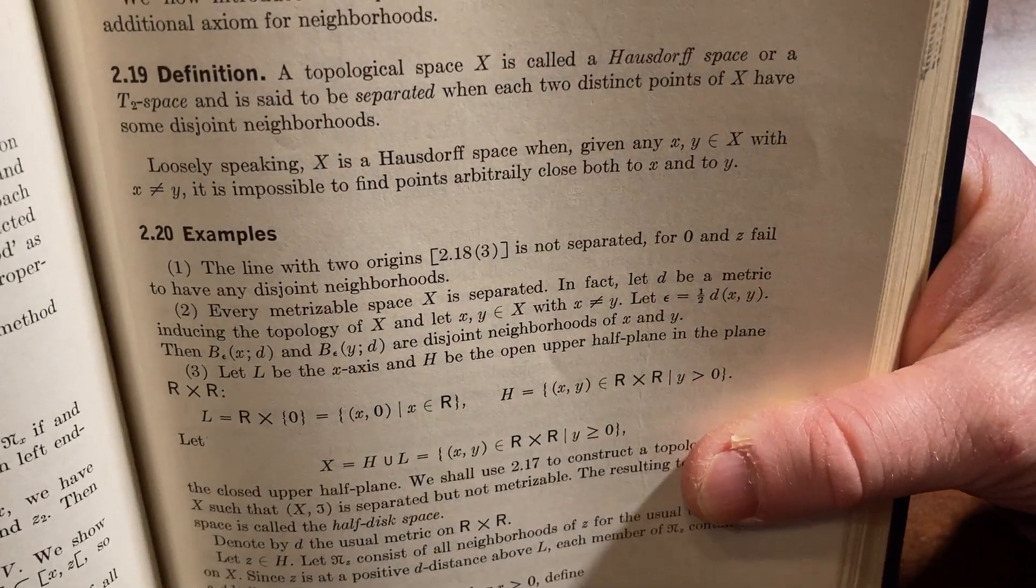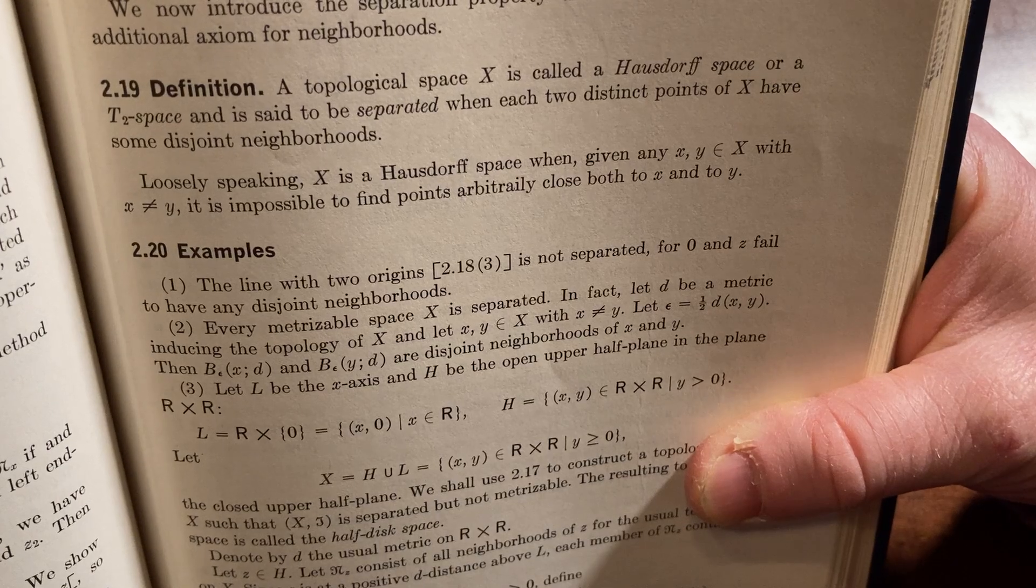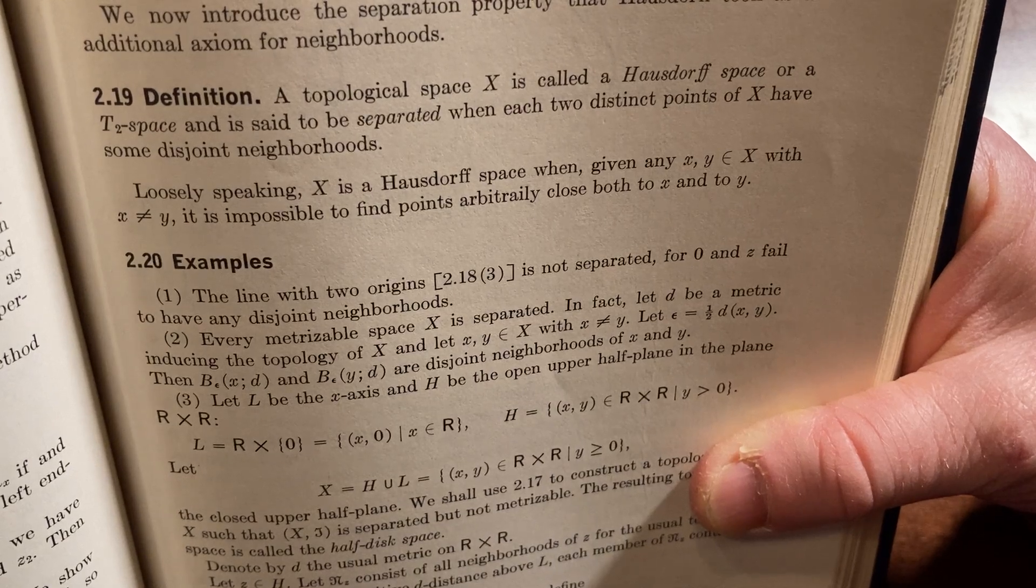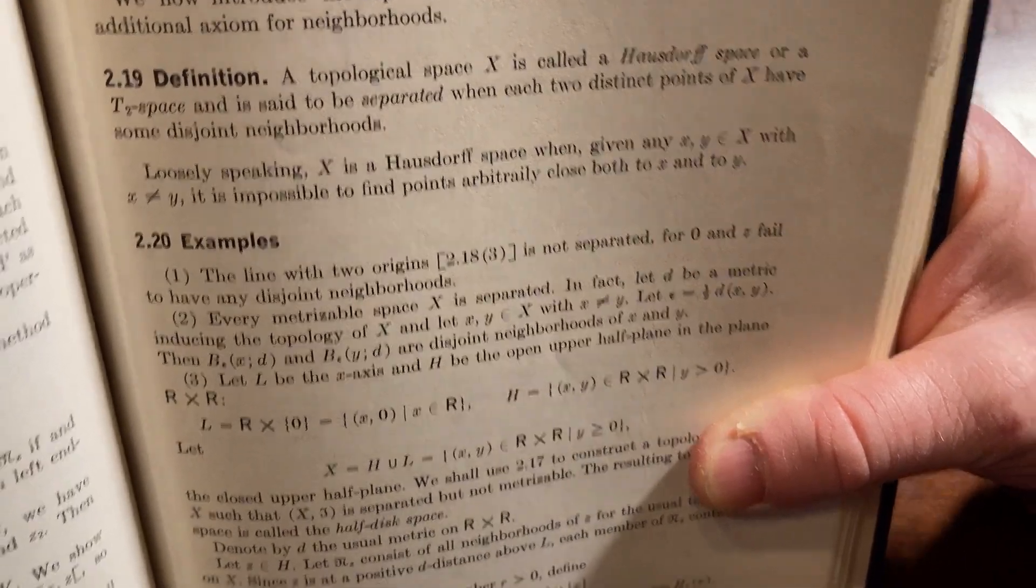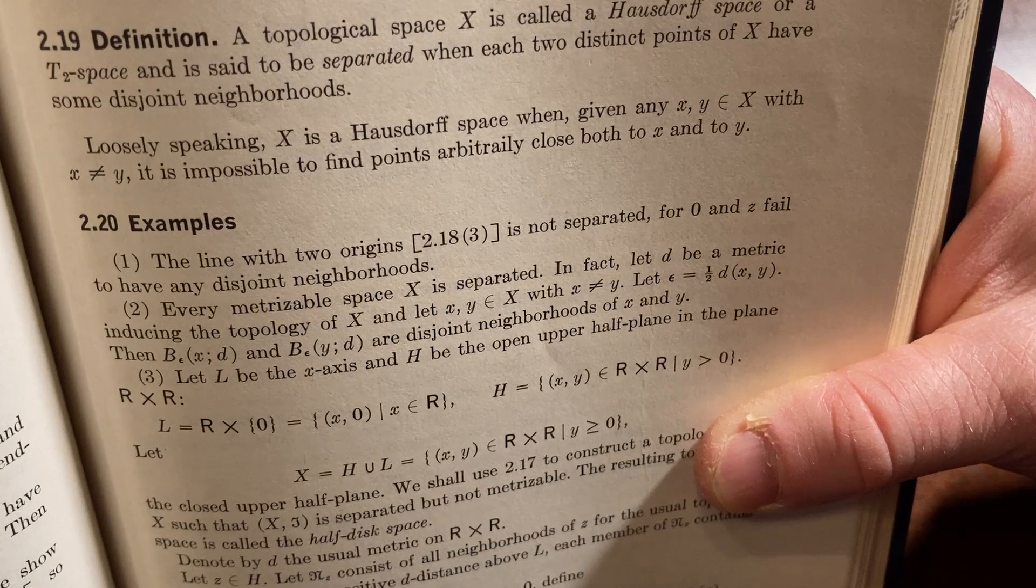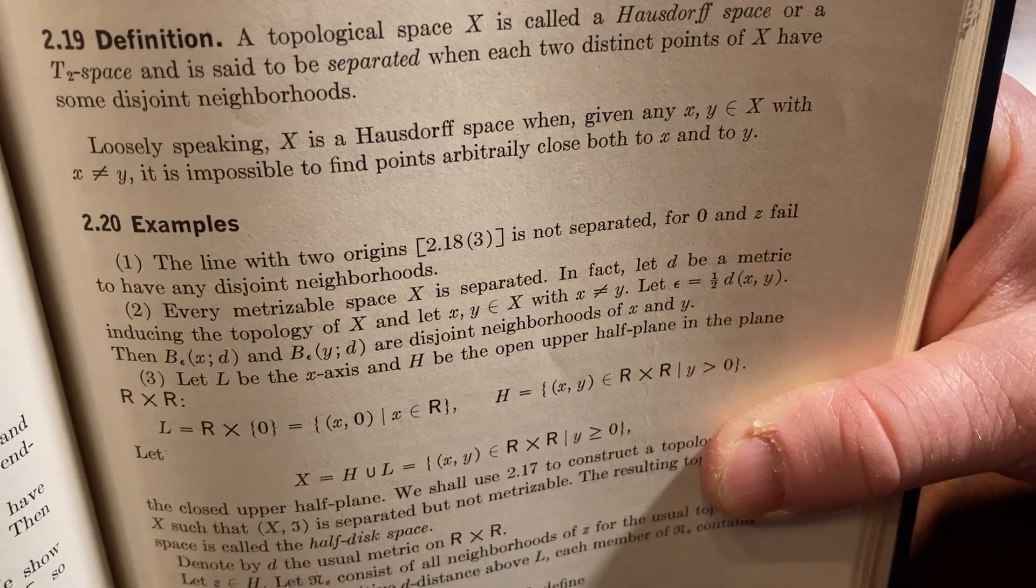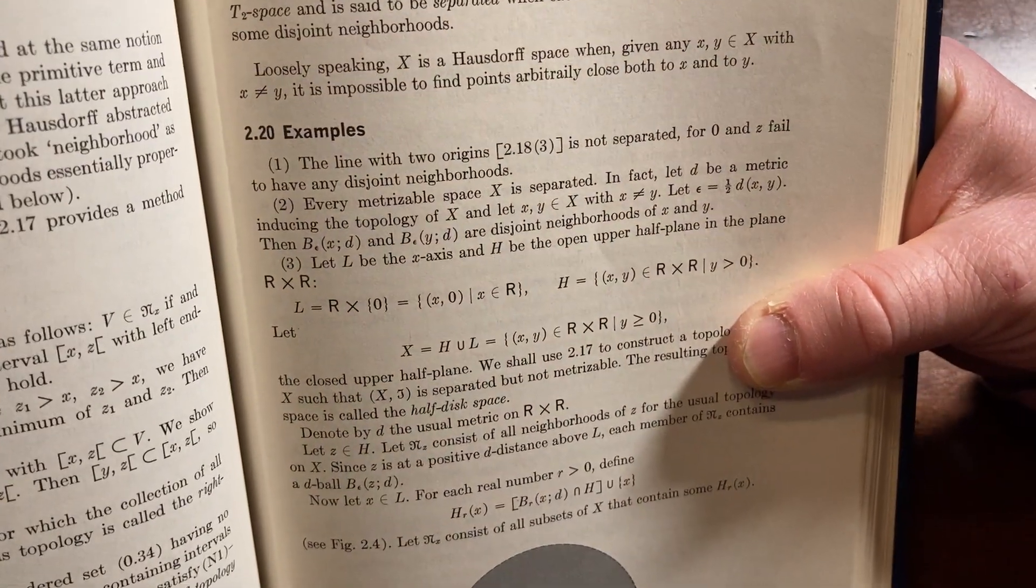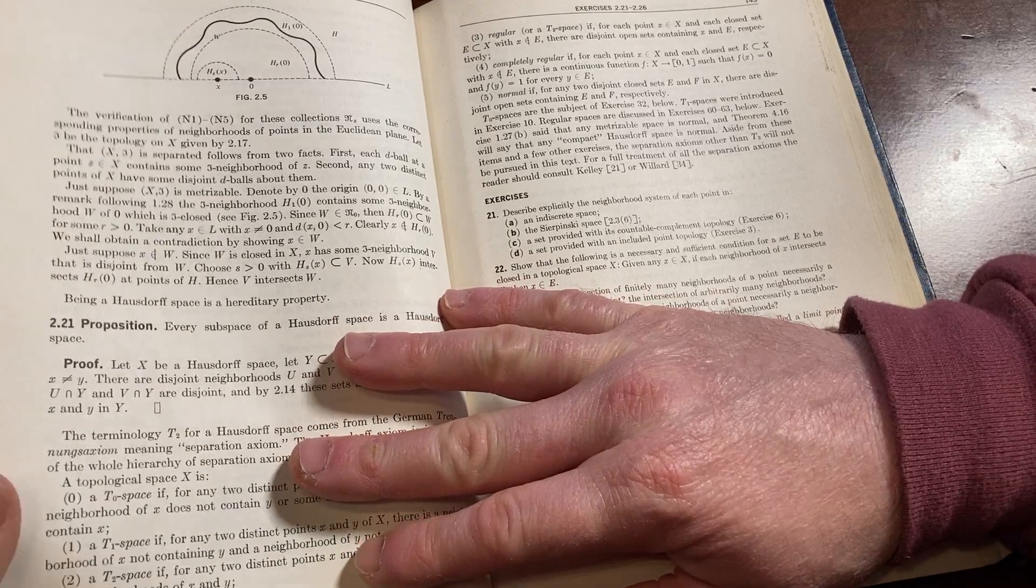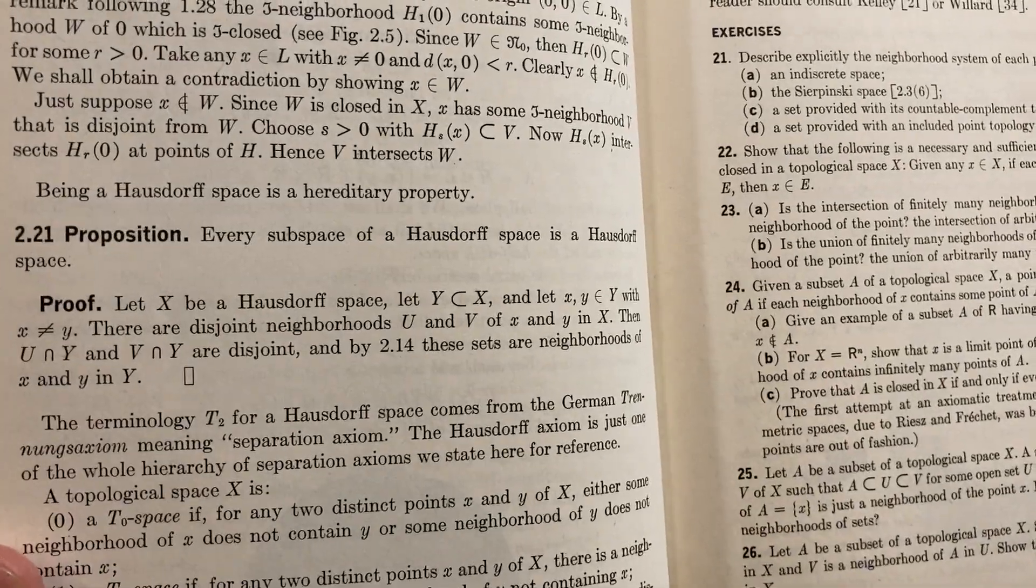The definition. Perfect. A topological space x is called a Hausdorff space or a T2 space and is said to be separated when each two distinct points of x have some disjoint neighborhoods. Loosely speaking, x is a Hausdorff space. Given any x and y in x with x not equal to y, it is impossible to find points arbitrarily close both to x and to y. Let me give you some examples.